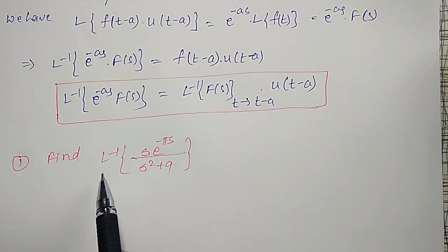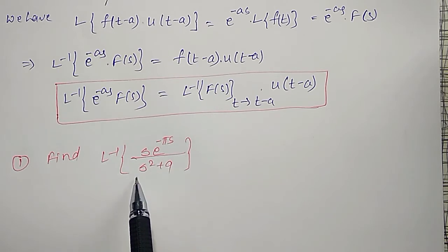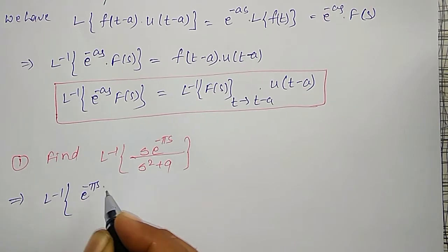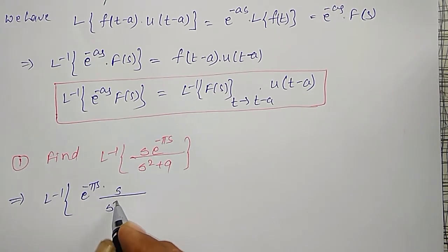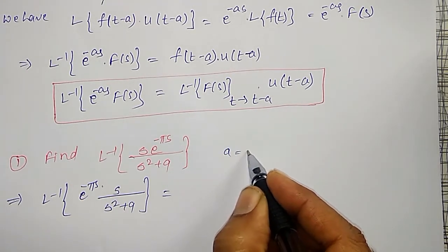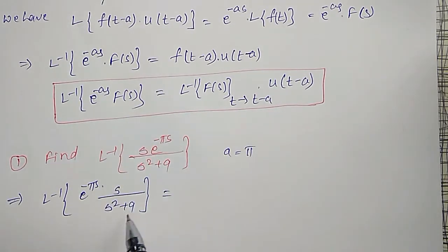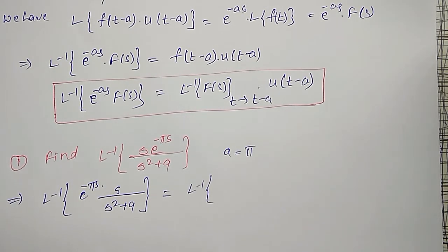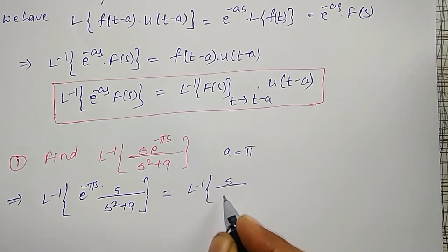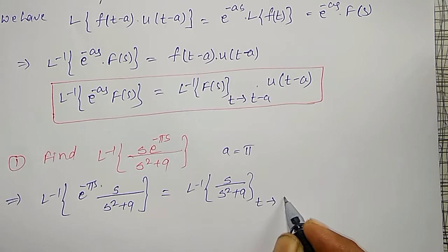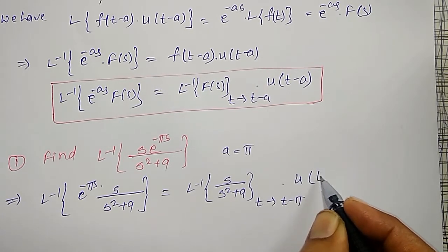My example is: find the inverse Laplace Transform of s times e to the power minus pi s divided by s squared plus 9. To evaluate this, I write: inverse Laplace Transform of e to the power minus pi s into s divided by s squared plus 9. Comparing with the left-hand side, e to the power minus pi s means a is equal to pi. And my F of s is s divided by s squared plus 9. By applying this property, the inverse Laplace Transform of F of s — where F of s is s divided by s squared plus 9 — will become a function of t in which t is replaced by t minus pi, and extra multiply u(t minus pi).